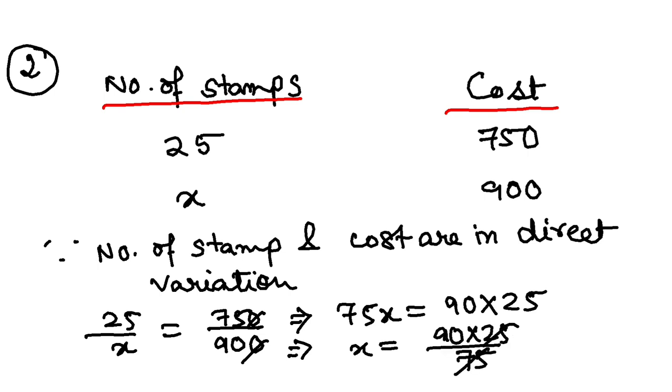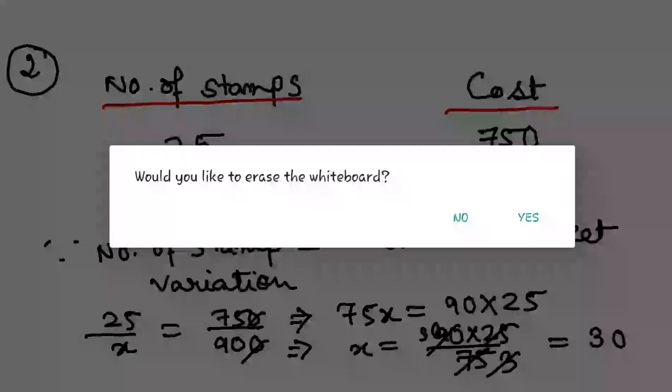25 to 75 is 3 times, 90 by 3 is 30, so my final value is 30. The answer is 30. The required number of stamps is 30. This is question number two. Now let us go to question number three.